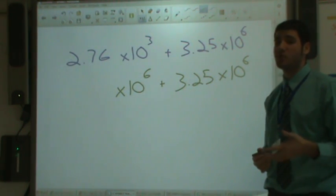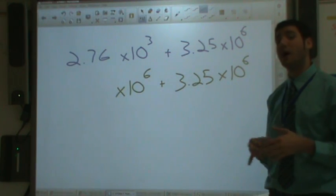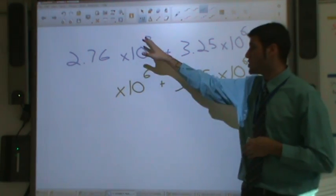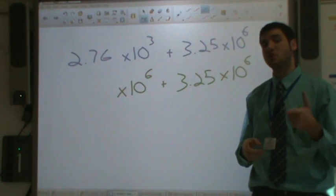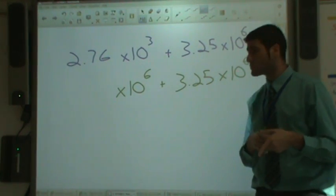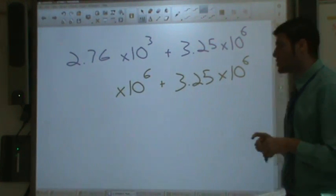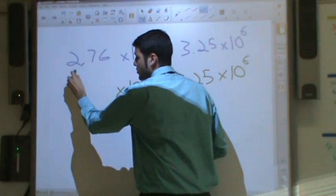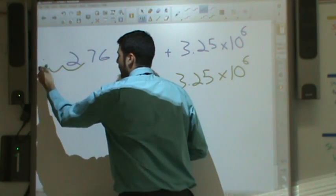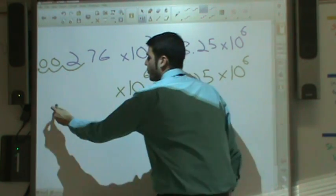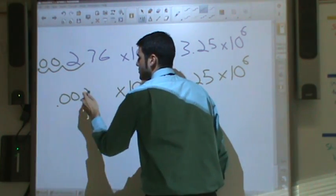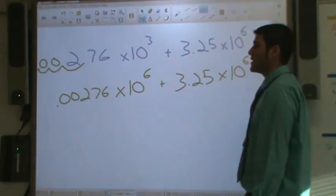So now I have to make sure that I take that into account when I'm talking about the decimal places. So since I changed this from 3 to 6, I changed it how many? 3. I changed it 3. So I'm going to have to move this over 3. 1, 2, 3. So now this is 0.00276 times 10 to the sixth.